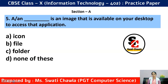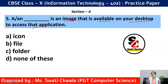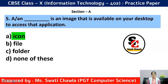Question 5: A dash is an image that is available on your desktop to access that application. Options: Icon, File, Folder, None of these. The correct answer is option A — Icon. An icon is an image available on your desktop; when you click on it, you can access that application.